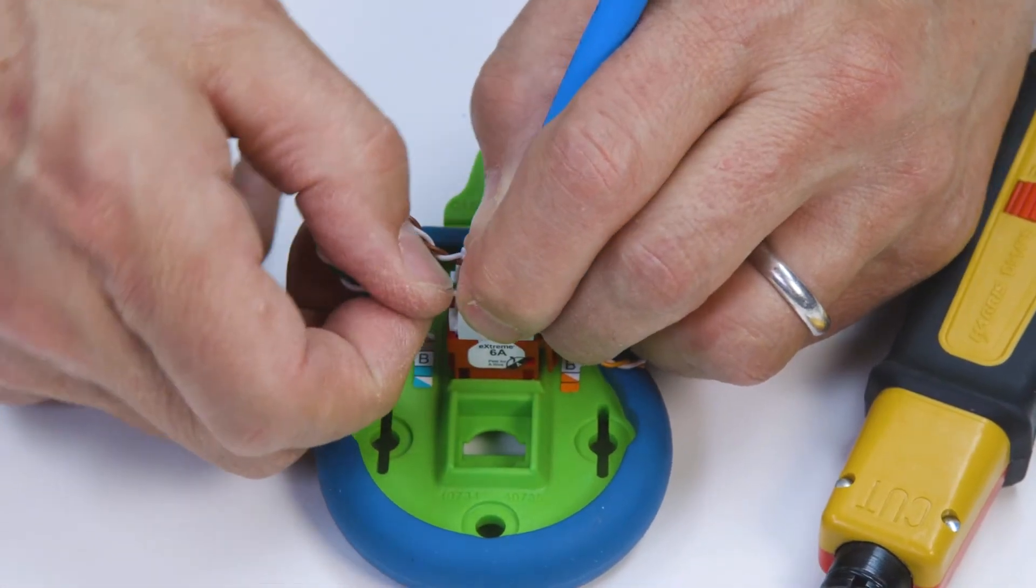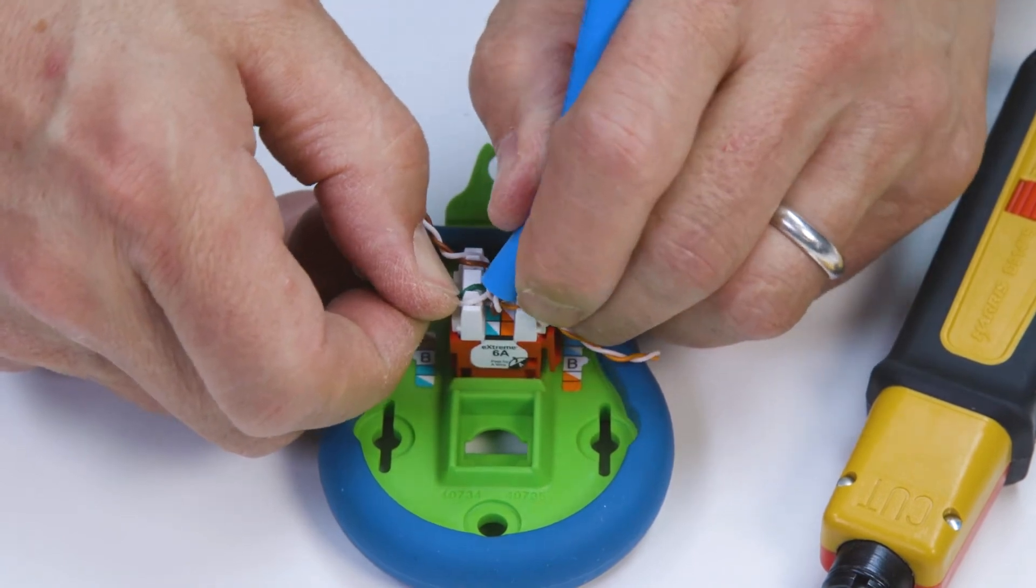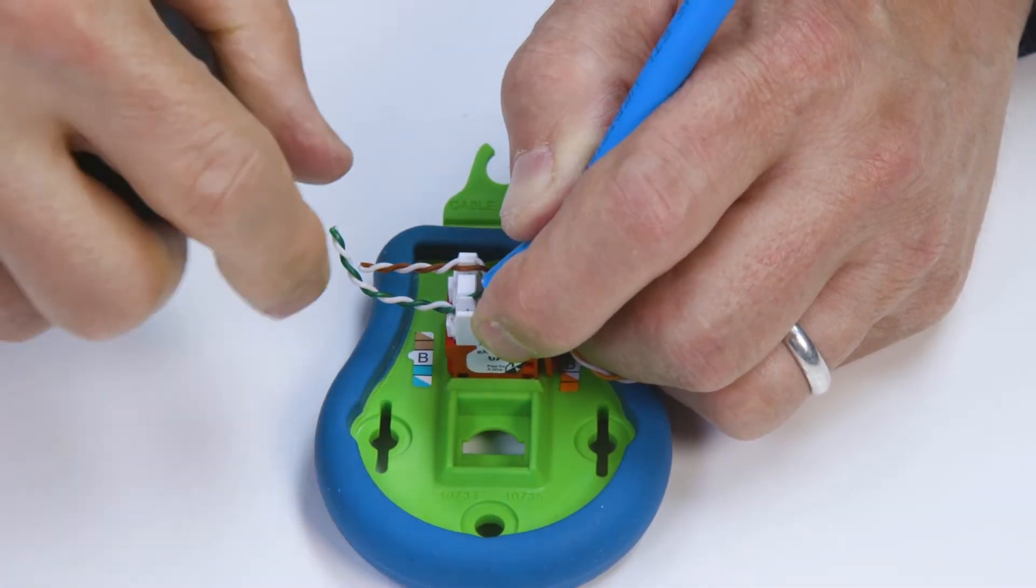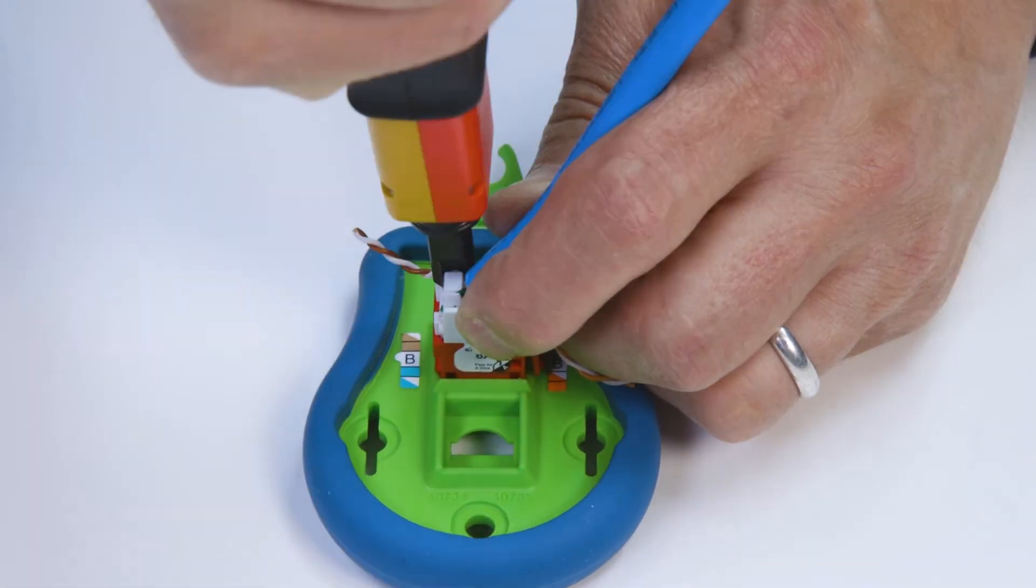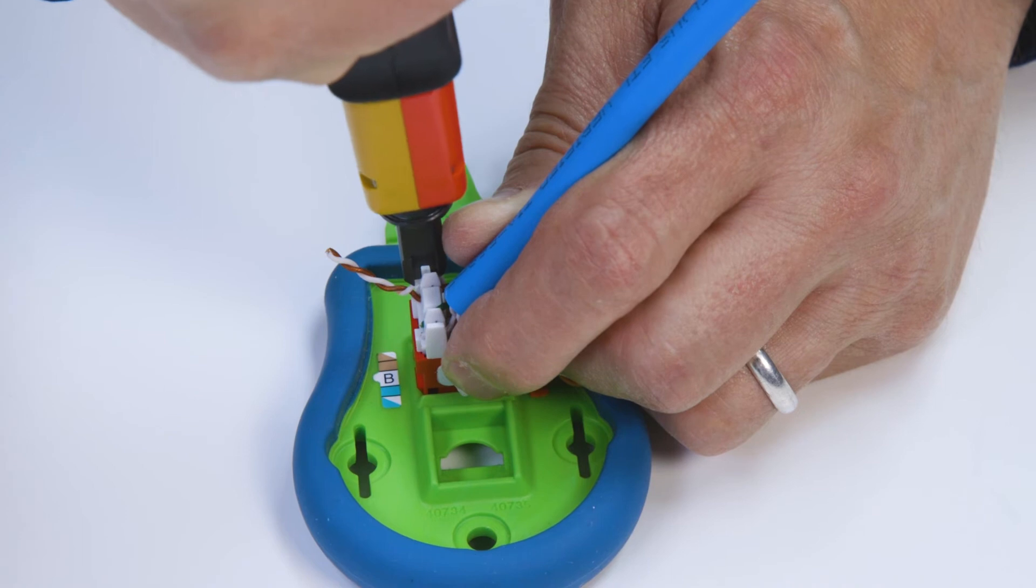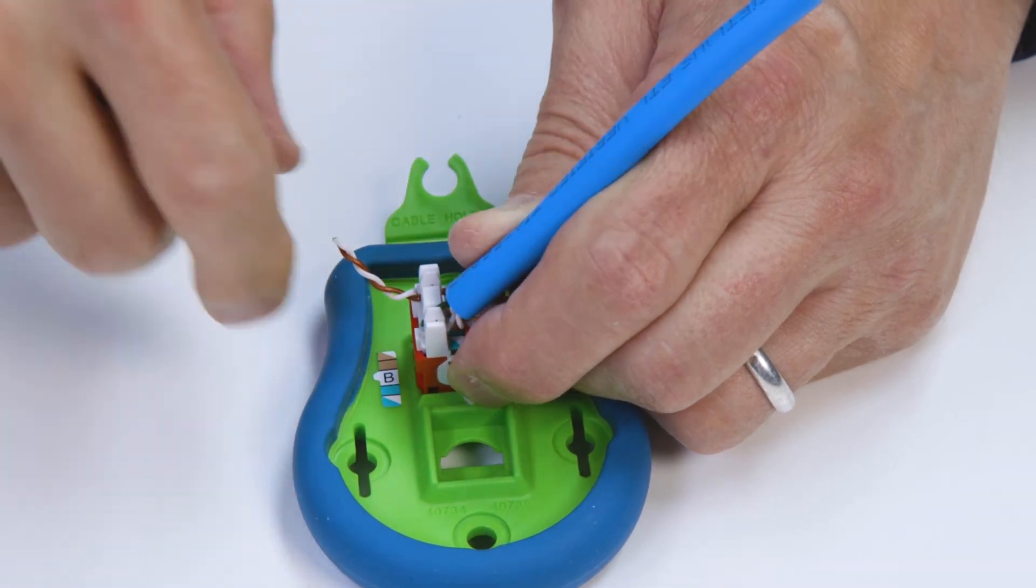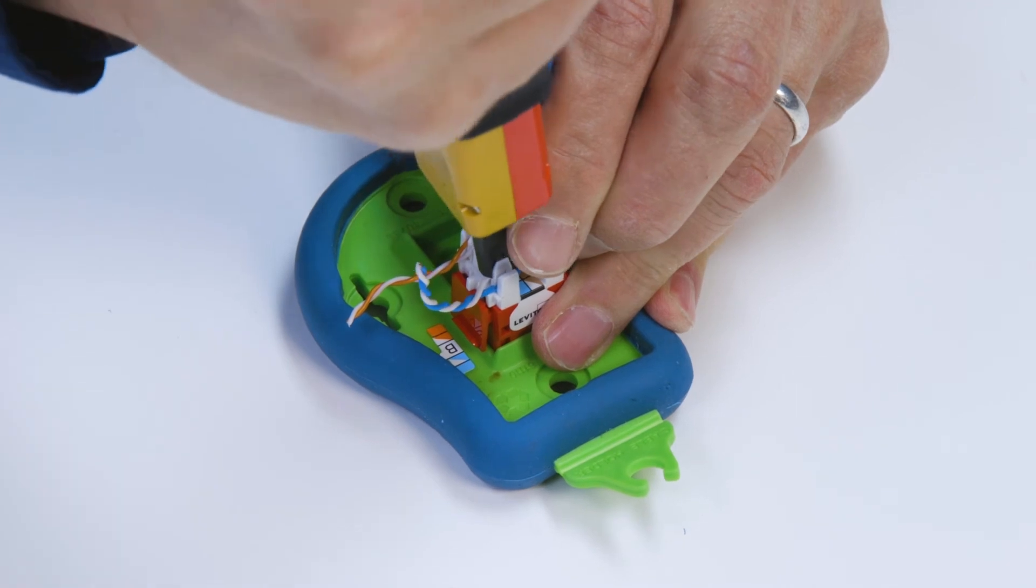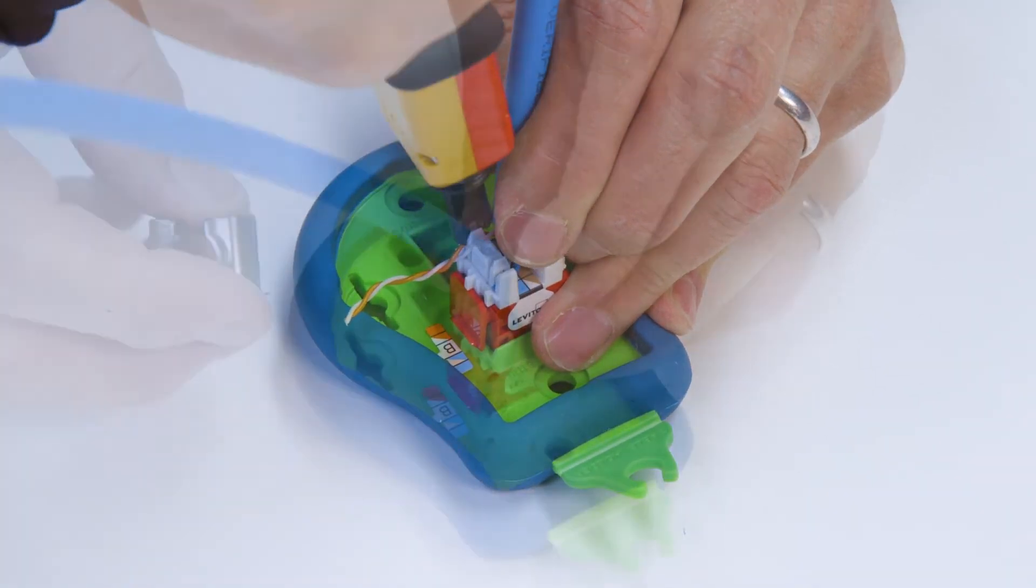Once all four pairs are in position, you can begin punching down the wires. Ensure your punch down tool is set to low impact. Then with the yellow side facing out, punch down to terminate the wires on each side of the jack. Angling the punch tool slightly outward will allow the tool blade to interface with the jack's cutting ledge.